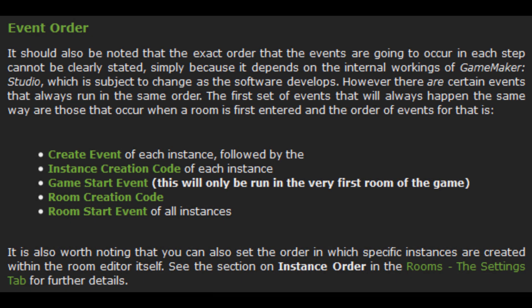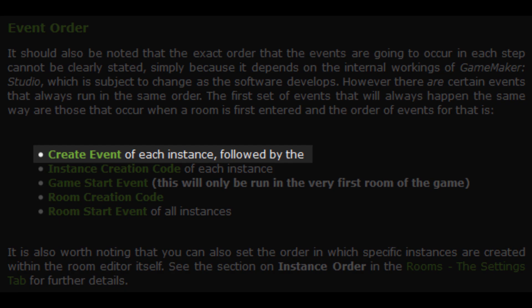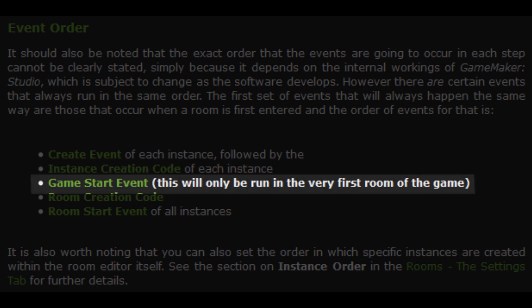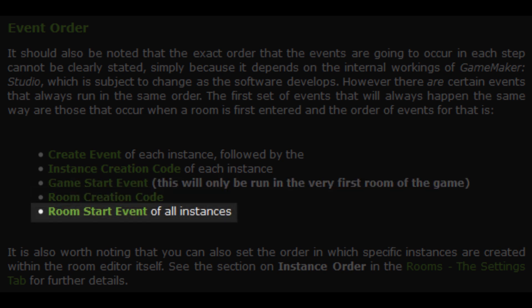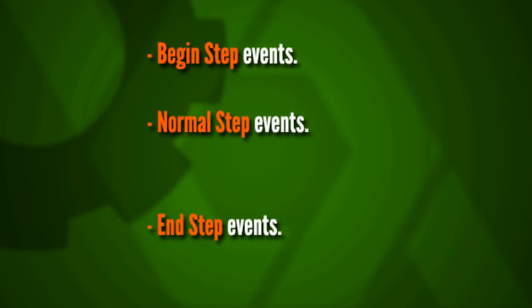When a room is entered for the first time, a series of events are always processed in the same order: the create event of every object in the room, followed by the instance creation code of each instance, followed by the game start event if it's the very first room of your game, then the room creation code and the room start event of any instances in the room. After this, every frame of your game events are processed in a certain order. This order might vary in small ways as GameMaker develops over time, but the begin step, normal step, and end step events will always occur at the same times in every frame.